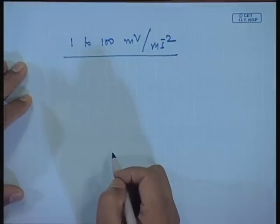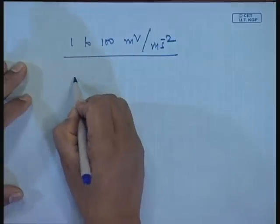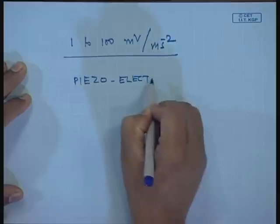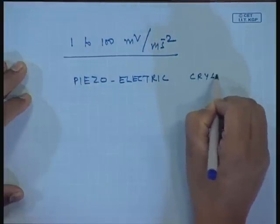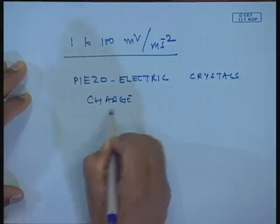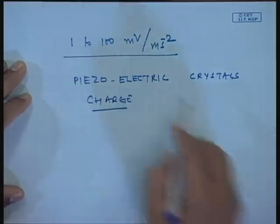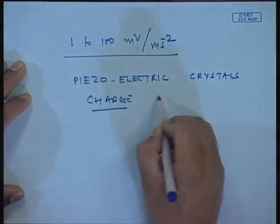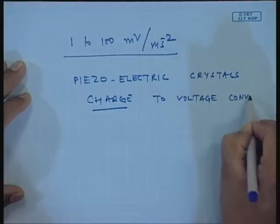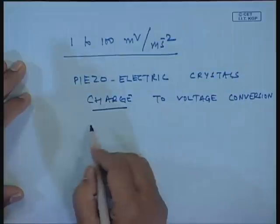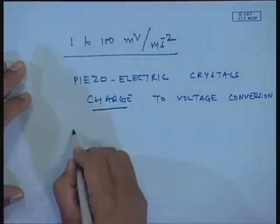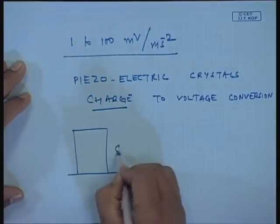The piezoelectric crystals produce a charge. I cannot store the charge for a long time because it will discharge and decay with time. So a charge-to-voltage conversion needs to be done, and once I have the voltage I can send it through the signal chain. Some accelerometers are the charge type - the output from this is a charge.